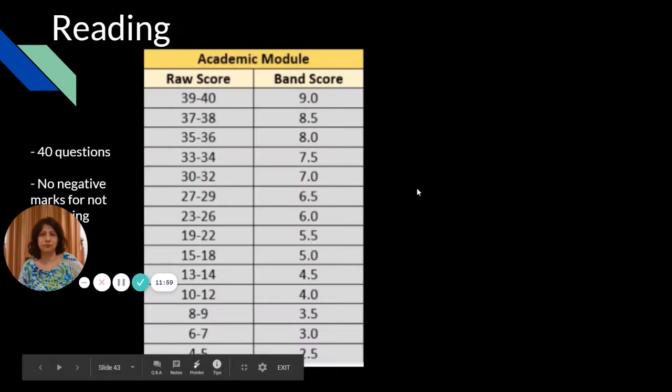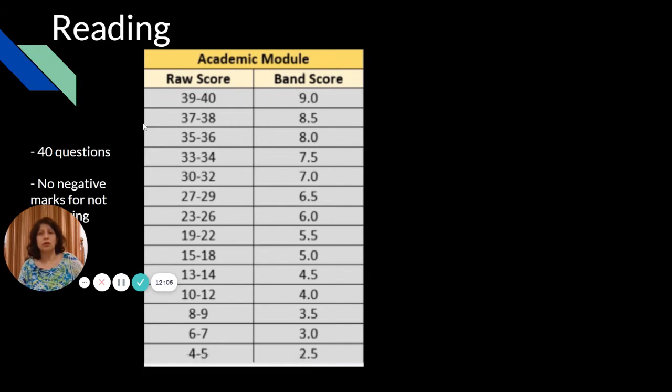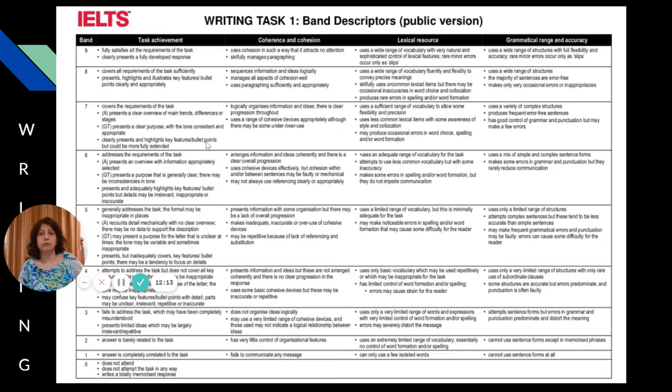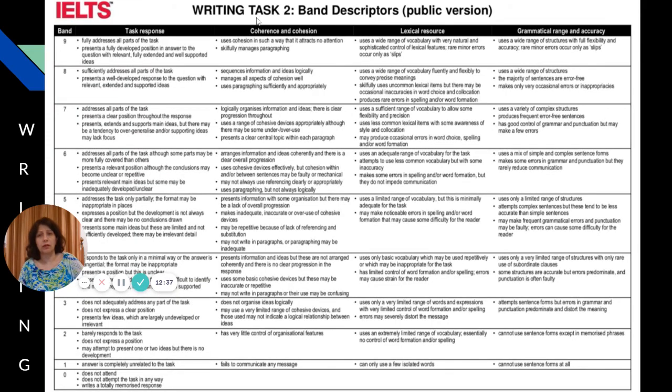The reading again, the academic module - this is the band score. This is the band score for the general one. You can see the difference here. These are the band descriptors - by band descriptors I mean these are criteria. This is writing task now I'm talking about. The task achievement, coherence and cohesion, lexical resource, and grammatical range and accuracy. These are the band scores which are awarded. The same goes for writing task two.